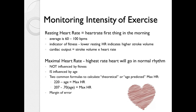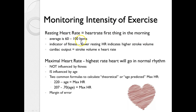Resting heart rate is taken first thing in the morning and averages between 60 and 100 beats per minute. A fit heart will have a greater stroke volume, and if stroke volume increases, heart rate will decrease. So a lower resting heart rate is indicative of a higher stroke volume and ultimately a higher fitness level. However, there is a genetic component, so it is possible to be fit and have a higher pulse, and vice versa.